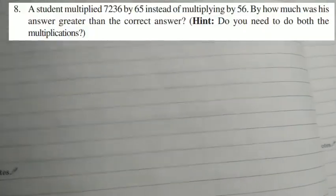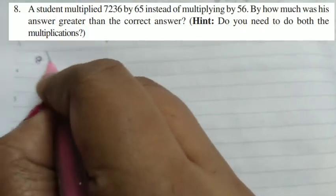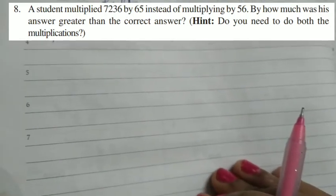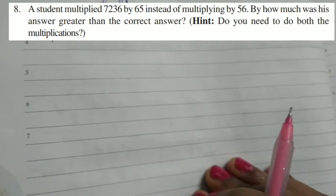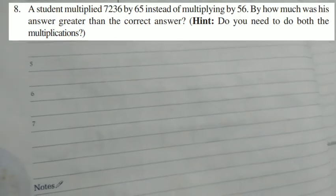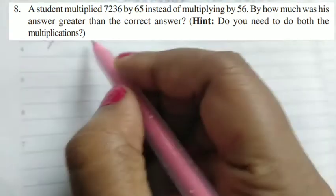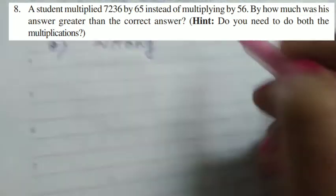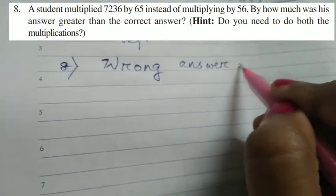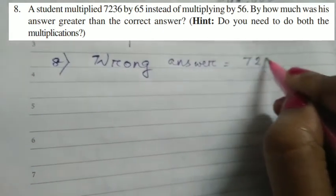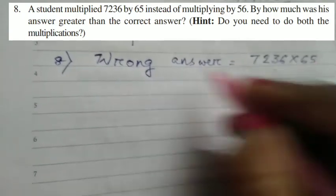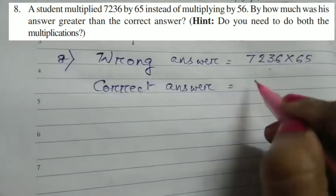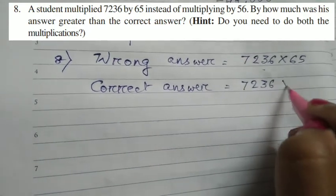Next, coming to question number 8. The question number 8 reads, a student multiplied 7,236 by 65 instead of 56. By how much was his answer greater than the correct answer? When I say wrong answer, when the student made a mistake, he or she got a wrong answer. What did the person do? 7,236 into 65. And the correct answer is equal to 7,236 into 56.